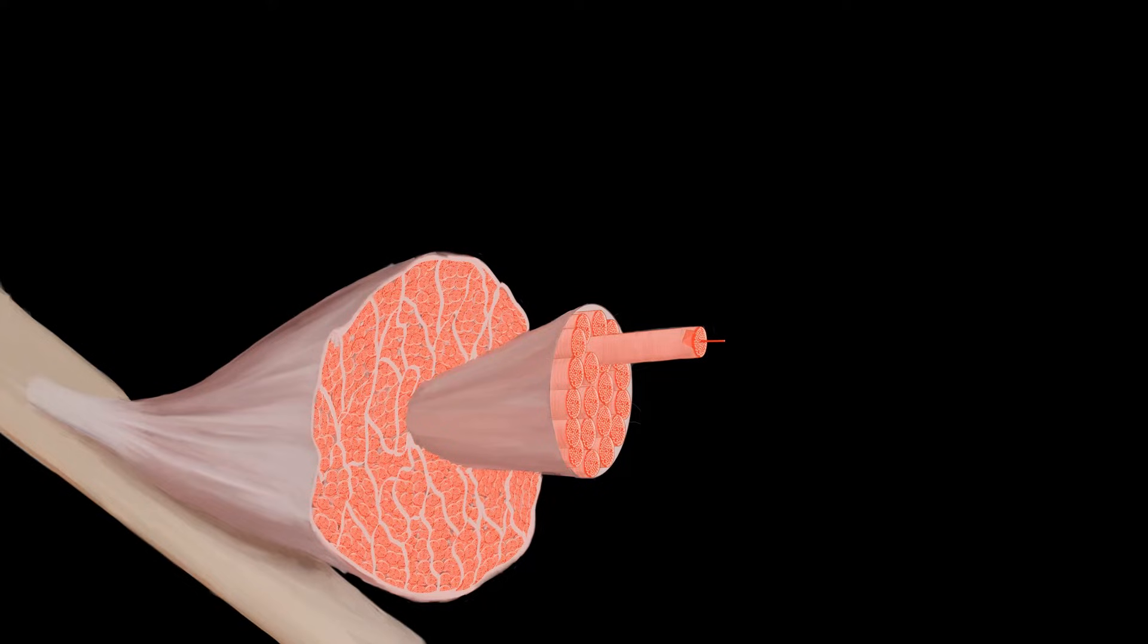I'm going to walk you through the structural levels of organization in the muscle, starting from the whole muscle and then walking you all the way down to the myofilaments, actin and myosin.